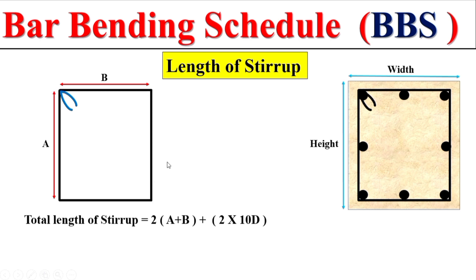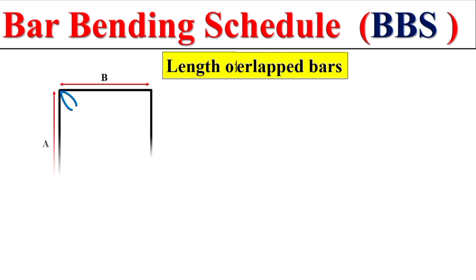To this total strip length, we also add the total bend length for the 90-degree bends. In this strip there are five 90-degree bends — one on each corner and two at the hook end. Since each 90-degree bend is taken as two times the diameter of the bar, the total deduction is 5 × 2D, giving us the final total length for the strip.